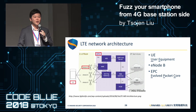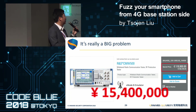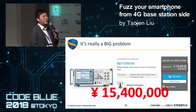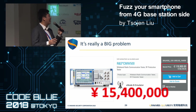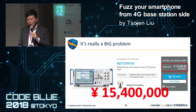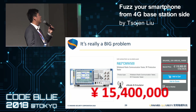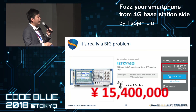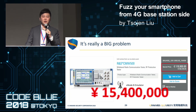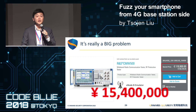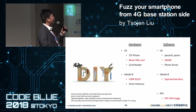I thought building an LTE environment was not a big problem — until I searched Google and found a commercial LTE base station simulator costing 15 million yen. Not every company has the budget for such an expensive device. Also, this kind of product is designed for interoperability testing, not for fuzzing — we cannot modify anything in it. So if we want to do LTE fuzzing, we have to build the base station ourselves.